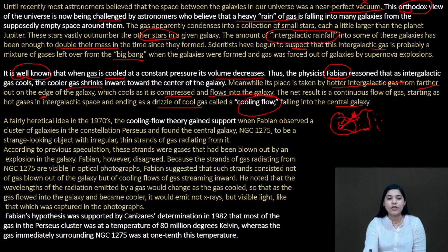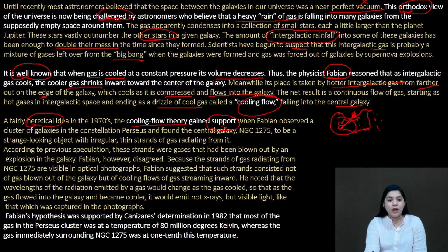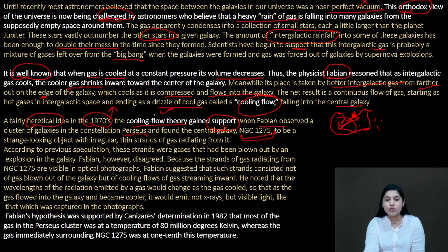But is this definitely right? Because it is challenging someone who said it is fairly heretical — meaning a rebel or against-the-norm idea. This is Fabian's cooling flow theory. Fabian's theory gained support when he observed a cluster of galaxies in the constellation Perseus and found at its center an object called NGC 1275 — a strange-looking object with irregular thin strands of gas radiating from it.